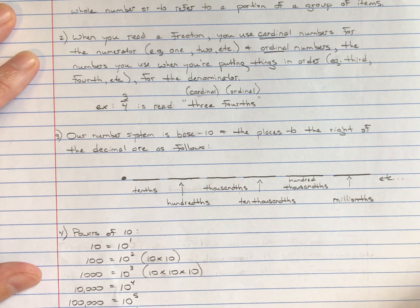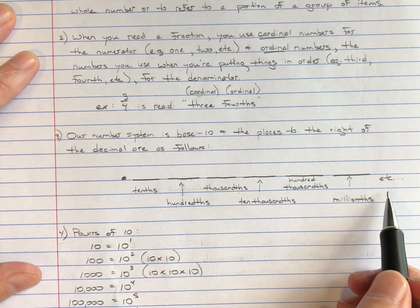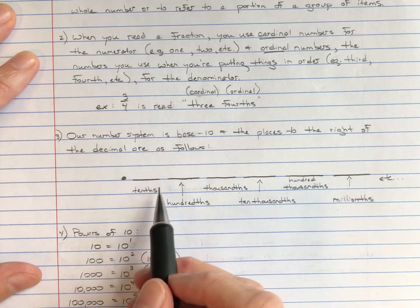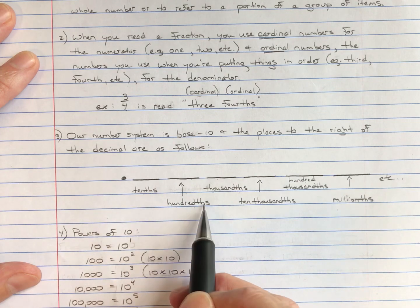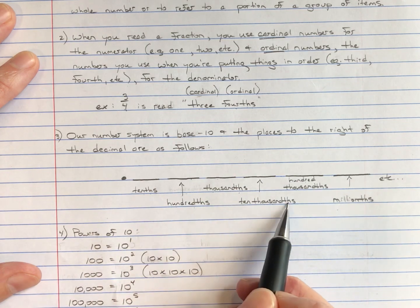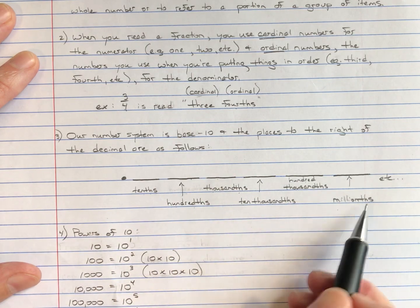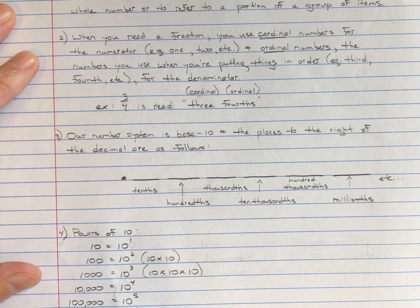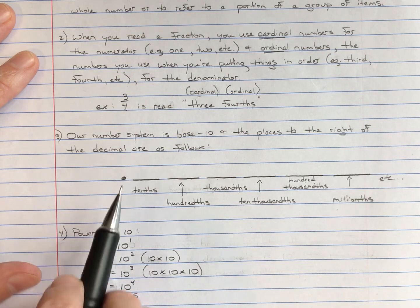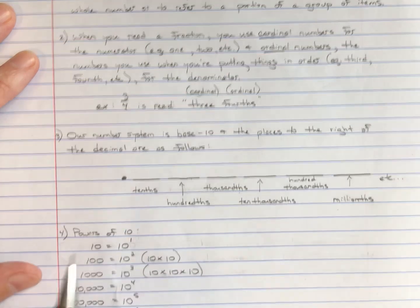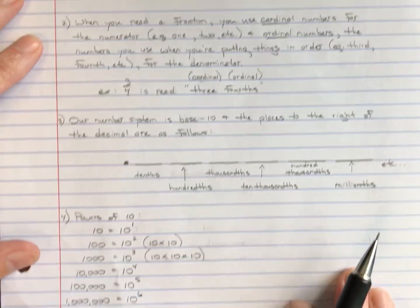Ten-millionths, hundred-millionths, and so on. Notice again all the '-ths' endings representing numbers that are to the right of the decimal point.